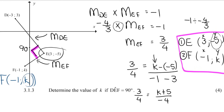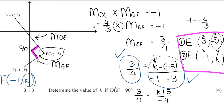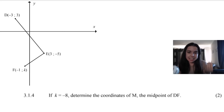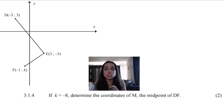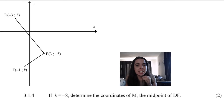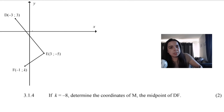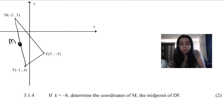Where do you get your marks? You get marks for figuring out that the gradient of EF is 3/4, then marks for substituting into the equation correctly, a mark for simplification while solving, and then a mark for your final answer. Question 3.1.4 says: if K is −8, determine the coordinates of M, the midpoint of DF. They are saying if D and F were connected, what is the midpoint M?